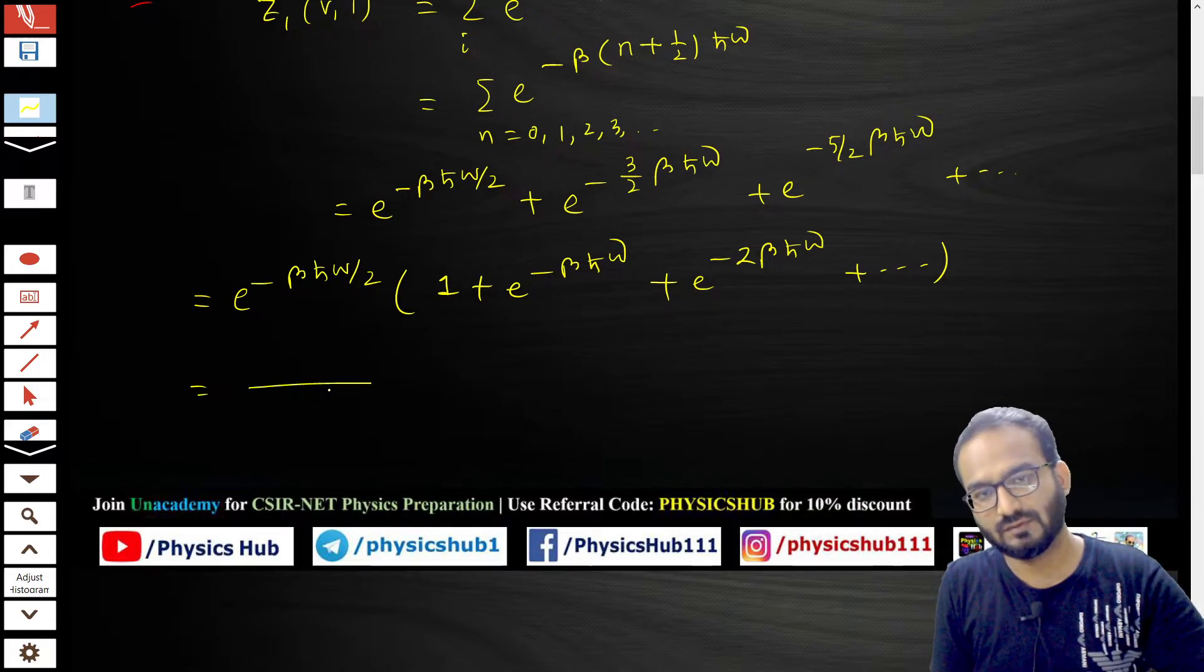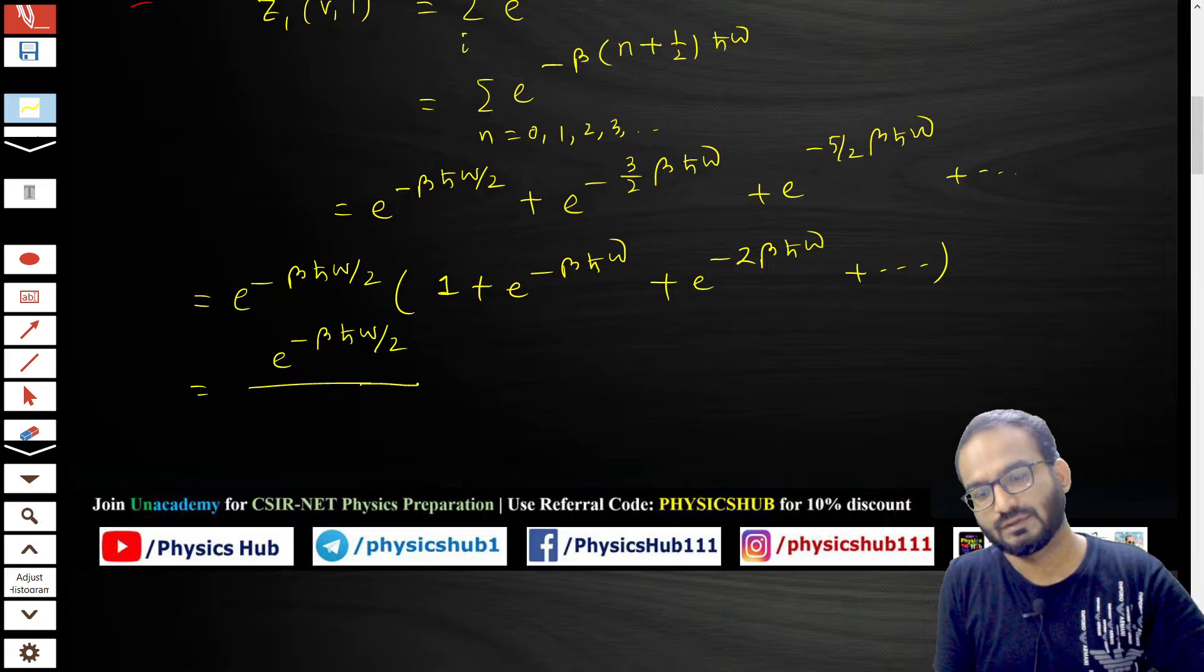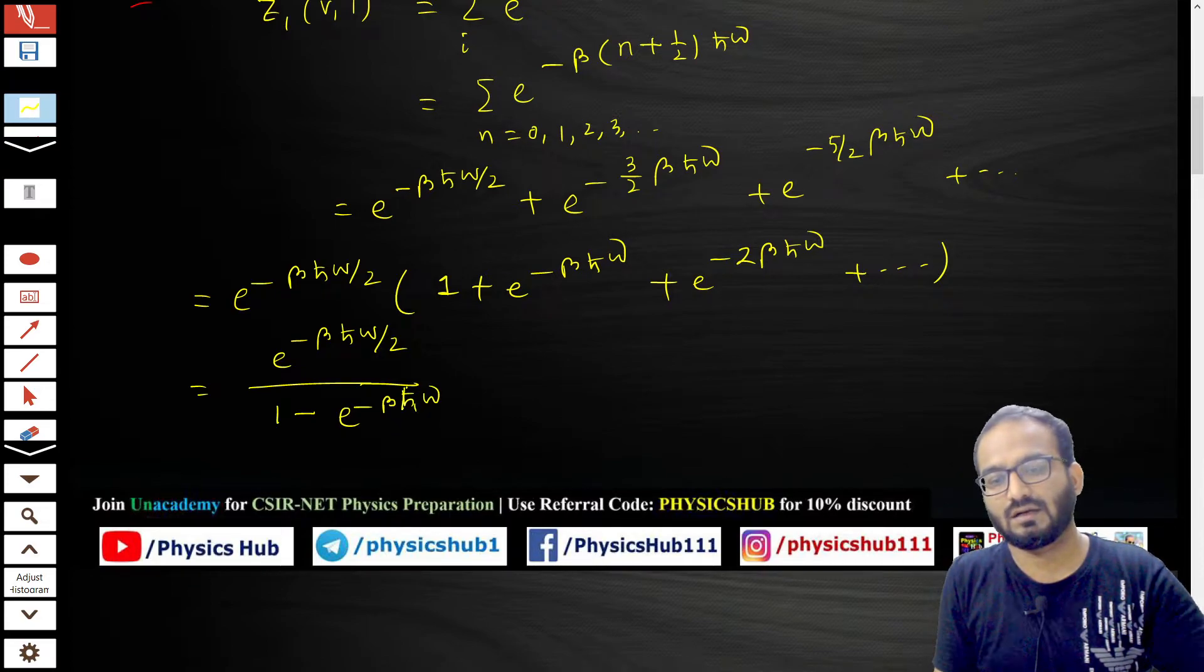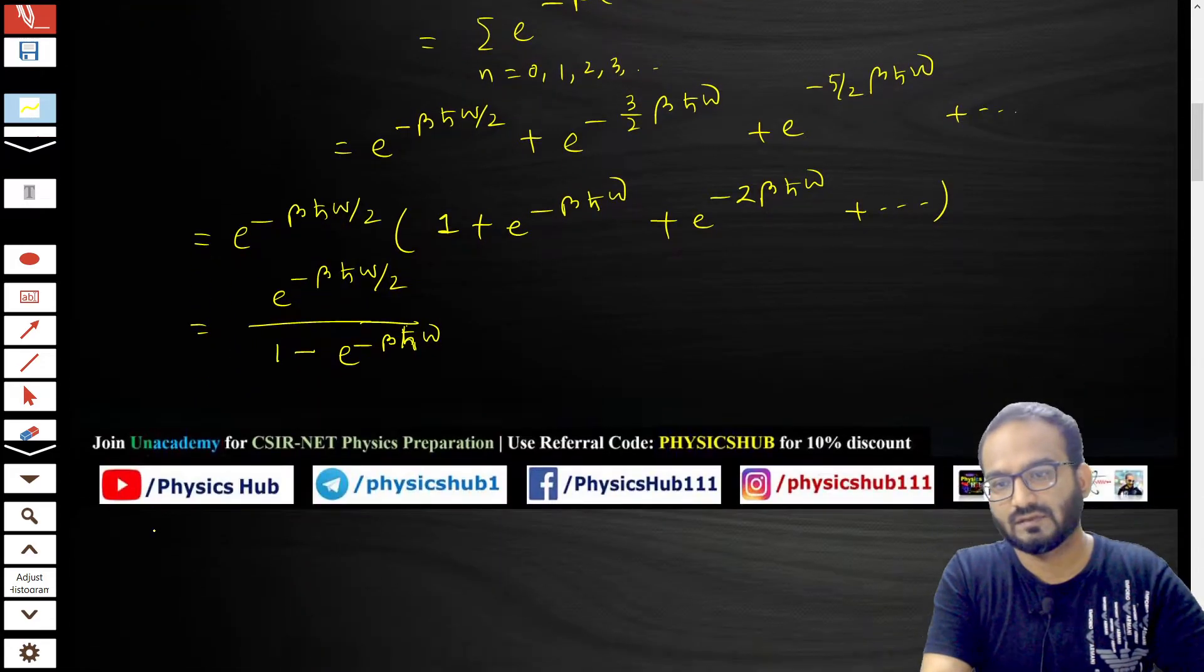The value of this infinite series is 1/(1-x). So we get e to the power minus βℏω/2 divided by (1 minus e to the power minus βℏω). This is the partition function for one oscillator.